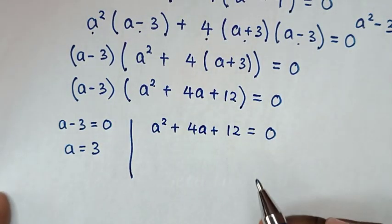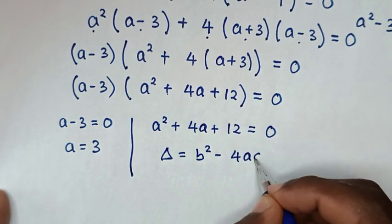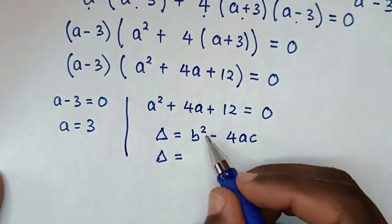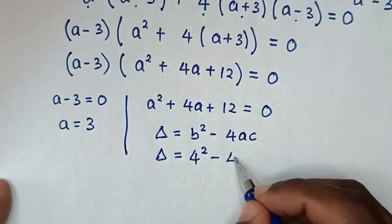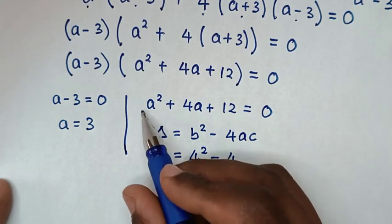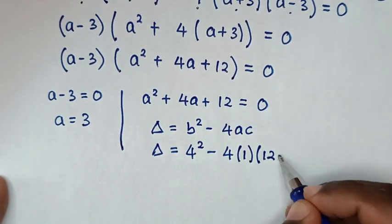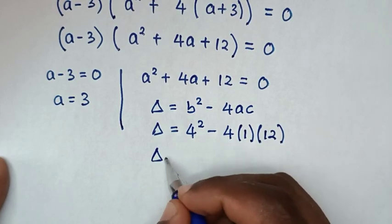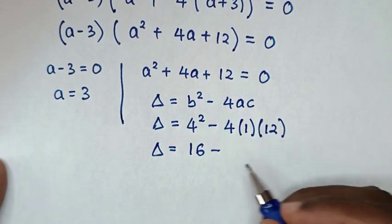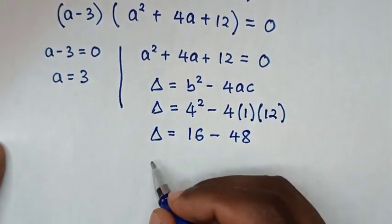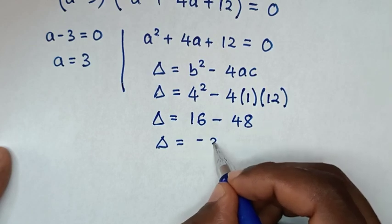For the second solution, we solve using the discriminant formula. The discriminant equals b squared minus 4ac. Here b is the coefficient of a, which is 4, so b squared is 4 squared equals 16. Then minus 4 times a-coefficient (which is 1) times c (which is 12) gives minus 48. So the discriminant equals 16 minus 48, which is negative 32.